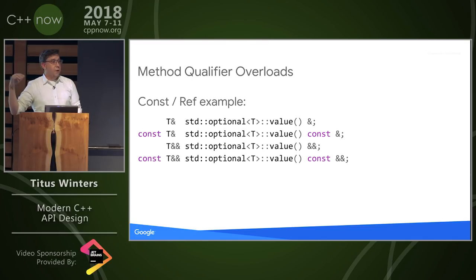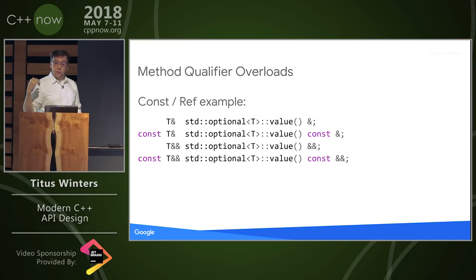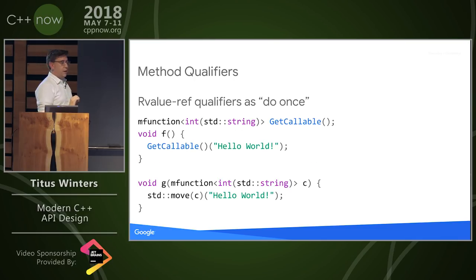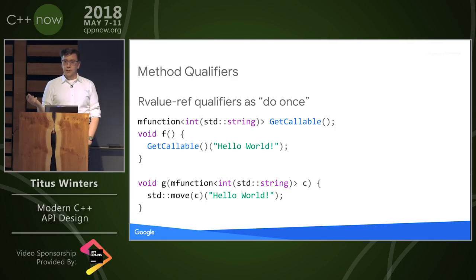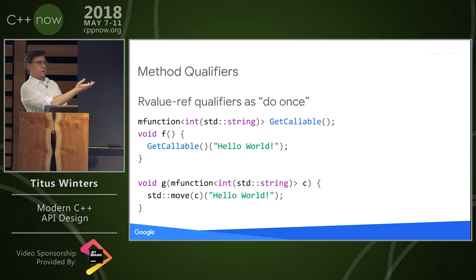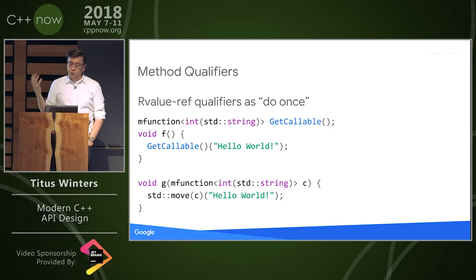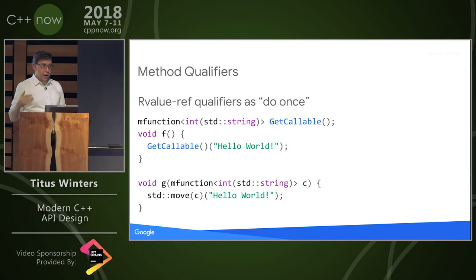We should talk a little about method qualifiers on their own, without an overload set. What do ref-qualified methods mean when not part of a set? If you've got only an rvalue ref qualifier, that means 'do once.' This is a good design for destructive operations and things like call-at-most-once. It should be used, however, only when the lvalue equivalent semantic would break the semantics of the type. Don't do this because of optimization — do this because of maintaining type invariants.